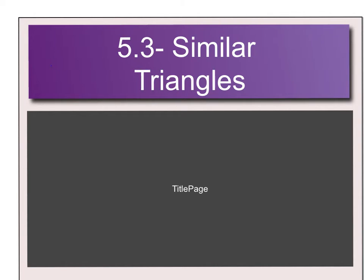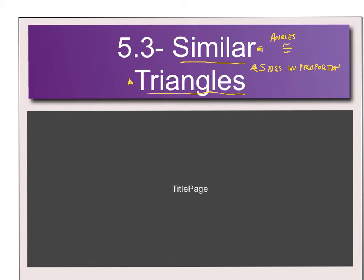Hello again geometry students. We are closing in towards the end of unit 5, and in section 5.3 we start talking about very specific similar triangles. Remember what it means to be similar: corresponding angles are congruent and sides are in proportion. Now we're focusing just on triangles, and there will be some concepts that look similar to things we've done in the past, specifically in unit 3 when we were talking about proofs and proving triangles congruent.